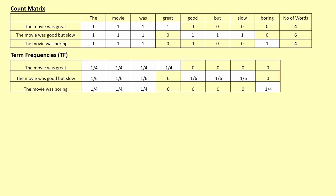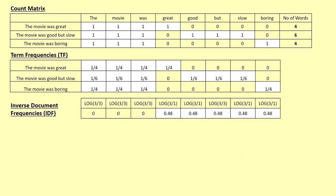Term frequency for a word is the number of times it occurred in a sentence divided by the total number of words in that sentence. In 'the movie was great,' the word 'movie' occurred once out of four words, so TF is one by four. In 'the movie was good but slow,' the TF for 'movie' is one by six, since there are six words total. Now let's look at the IDF values.